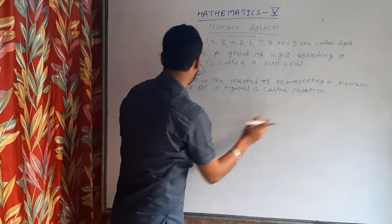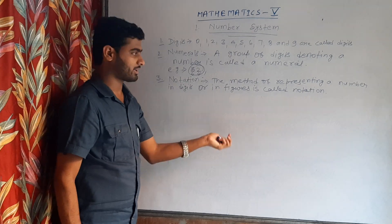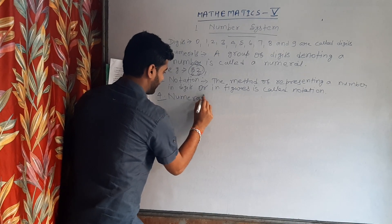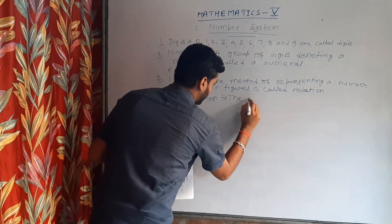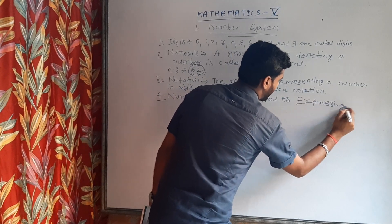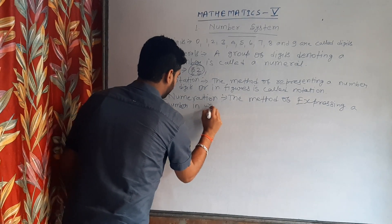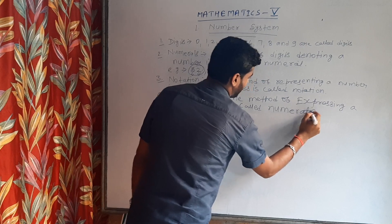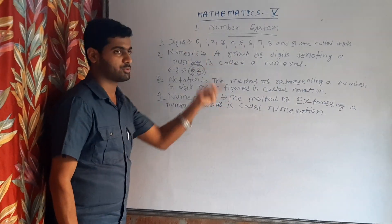The method of representing a number in digits or in figures — जब हम किसी भी नंबर को digits के द्वारा represent करते हैं, वो notation होता है। और numeration — expressing a number in words is called numeration. जब हम किसी भी नंबर को words के द्वारा represent करते हैं, तो वो numeration कहलाता है।